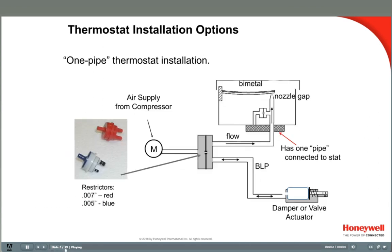This diagram represents a one-pipe thermostat installation — same thermostat, just a different installation. In a one-pipe installation, the restrictor, obtained separately, is in the main air supply, not inside the thermostat. The main air port on the stat is blocked, but the nozzle flapper operation remains the same. All the air lines after the restrictor will assume the air pressure value that develops at the thermostat's nozzle. So the air pressure in the stat is also the air pressure in the branch line and in the actuator, and a valve or damper connected to this actuator will modulate in proportion to the room's temperature change.